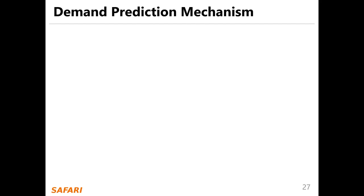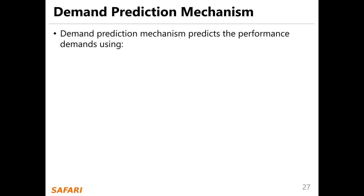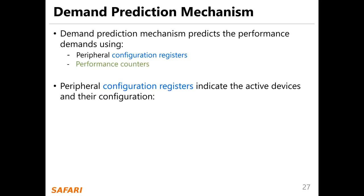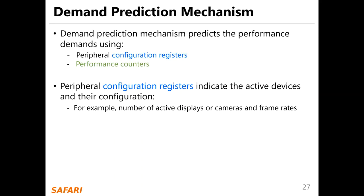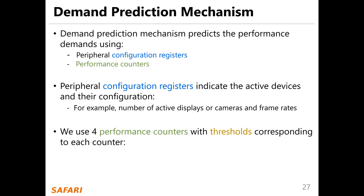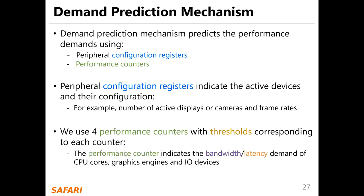The second component is the demand prediction mechanism. It predicts the performance demand using peripheral configuration registers and performance counters. Peripheral configuration registers indicate the active devices and their configuration, for example the number of active displays, cameras, and frame rates. We use four performance counters with thresholds corresponding to each counter. Performance counters indicate the bandwidth and latency demands of CPU cores, graphics engines, and IO devices.